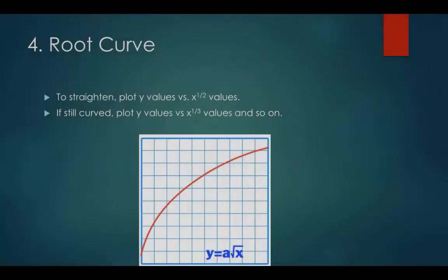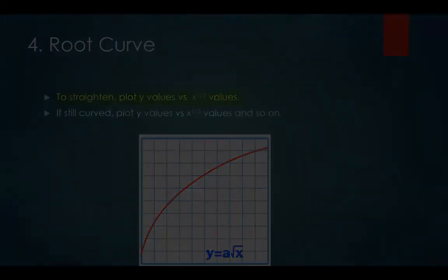Root curves have points that are best represented by a curve that looks like the path of a ball being thrown left to right. The line rises quickly, then begins to flatten out. The algebraic equation that models this type of graph is y equals a root x. This line may be straightened by plotting y versus root x, or x to the power one half.